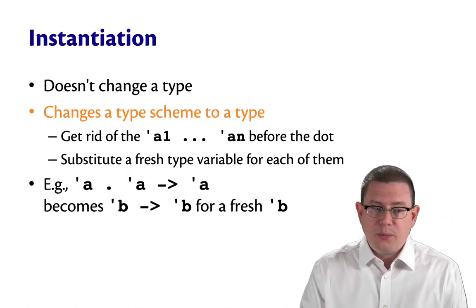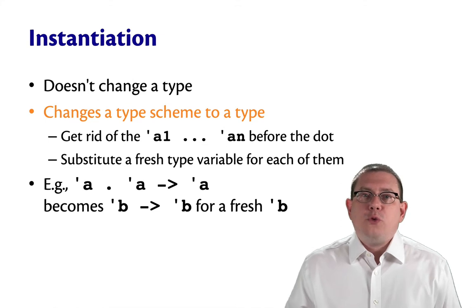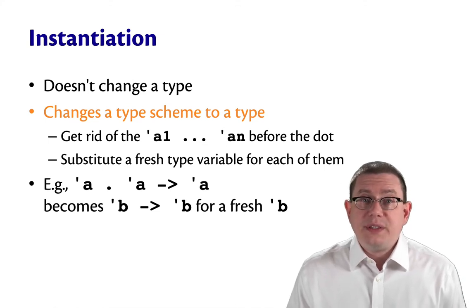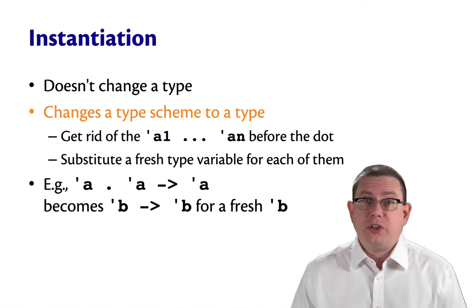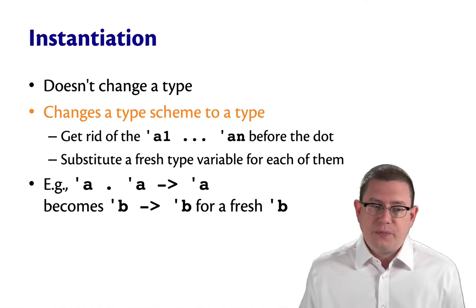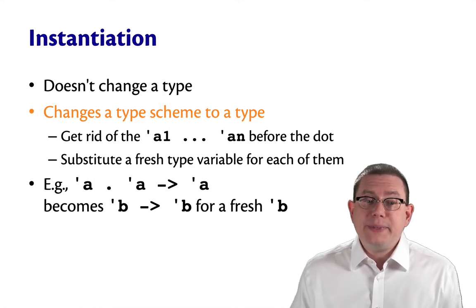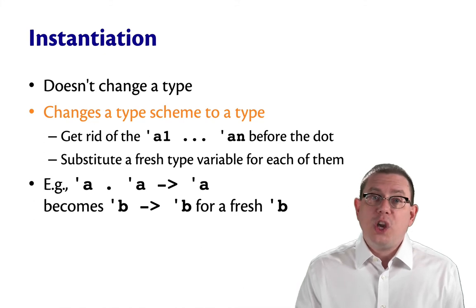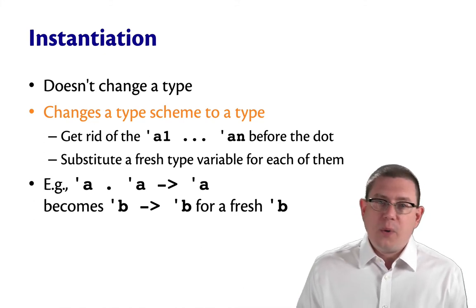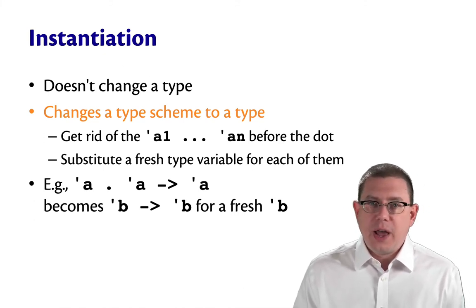So instantiation then, in more detail, if you apply instantiate to a type, strictly speaking a type, not a type scheme, so there's no quantification going on, it doesn't change it, it just leaves types unchanged. But when you instantiate a type scheme, you're changing it back into a type. You get rid of the alpha1, alpha2, alphan, however many there are, dots in front of it.